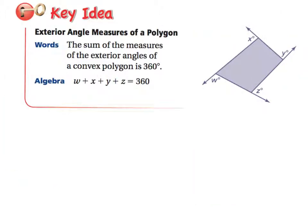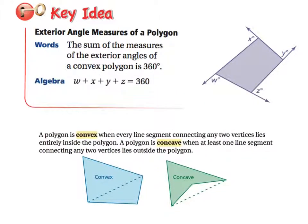Which leads us into our next key idea: the exterior angles. The sum of the measures of all of the exterior angles of a convex polygon. Whoa, wait a minute. You're probably thinking to yourself, well, I don't know what that is. What's a convex polygon? Well, I'm glad you asked. Here it is.